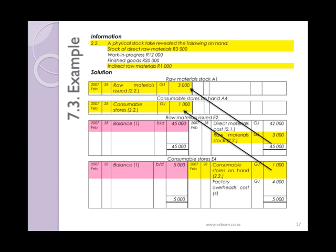2.2 — a physical stock take revealed the following on hand: stock of direct raw materials 3,000 rand, and indirect raw materials 1,000 rand. In both cases, this represents the amount that is actually left over — in other words, the asset account. You will therefore need to create a raw materials stock asset and consumable stores on hand asset, with balances on the debit side. These will need to have been transferred out of the original raw materials issued and consumable stores expense accounts respectively.